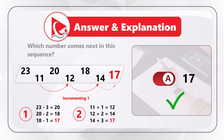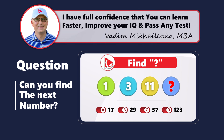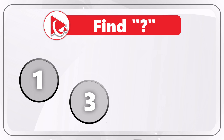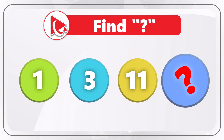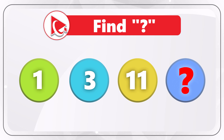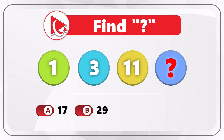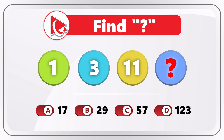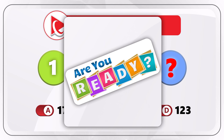Did you get the same answer? If not, please make sure to post your answer and solution in comments. Here's a question where you might struggle to get to the correct answer, but I have full confidence you'll solve this challenge. You're presented with a sequence: 1, 3, 11, and then the missing number. You need to determine the missing number and select one of four possible choices: A: 17, B: 29, C: 57, D: 123. I recommend you run this question through the most common patterns you have in mind. Are you ready to compare solutions?